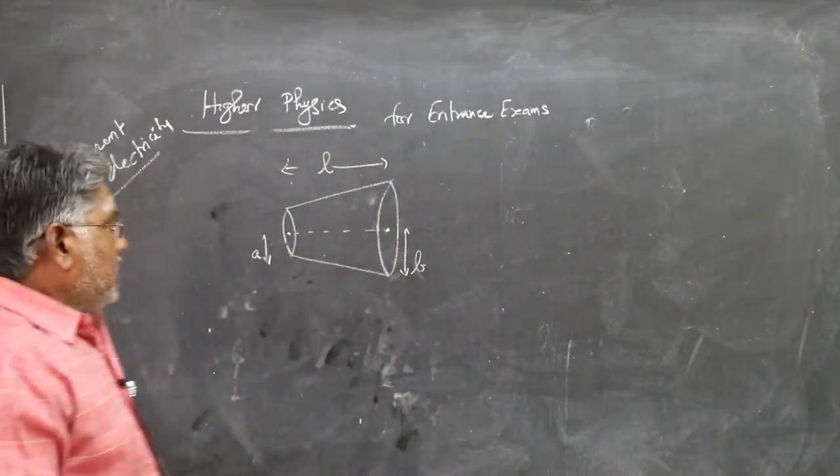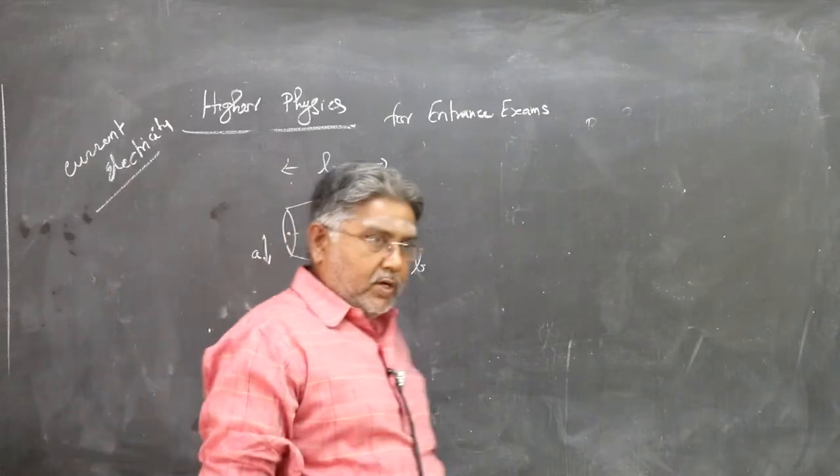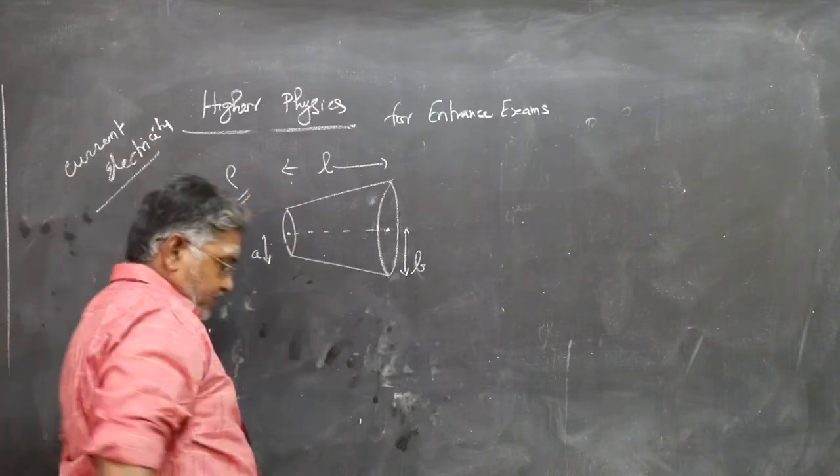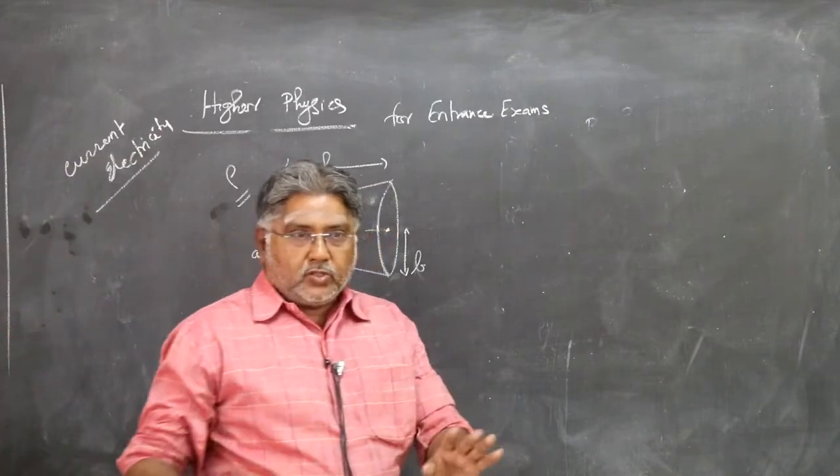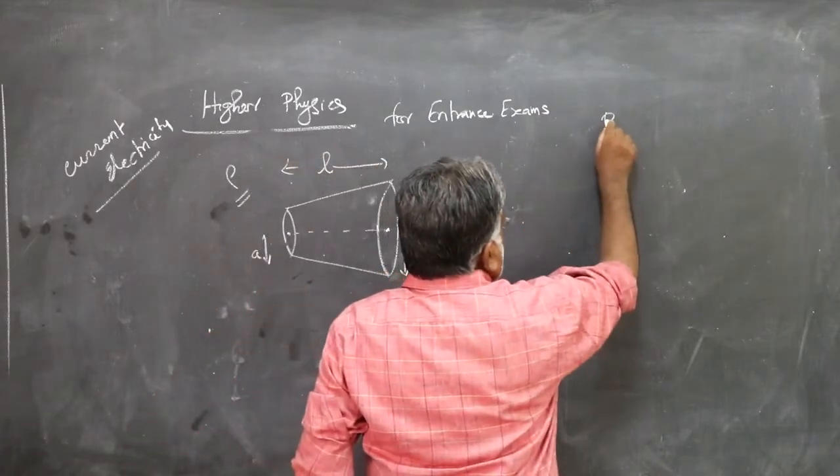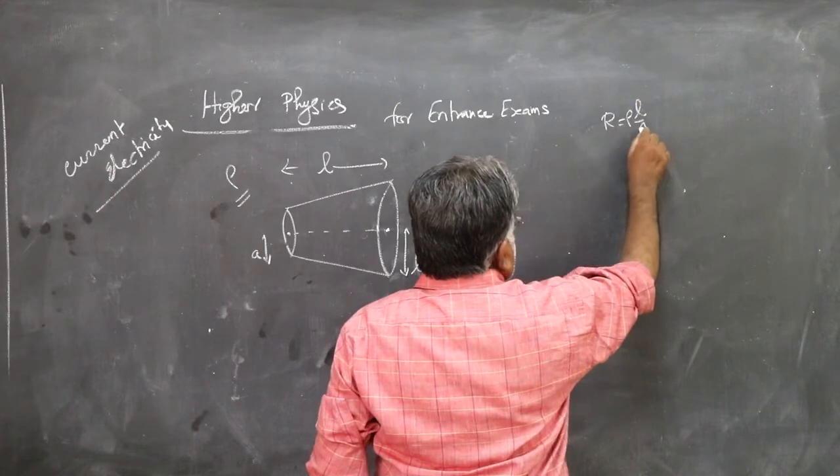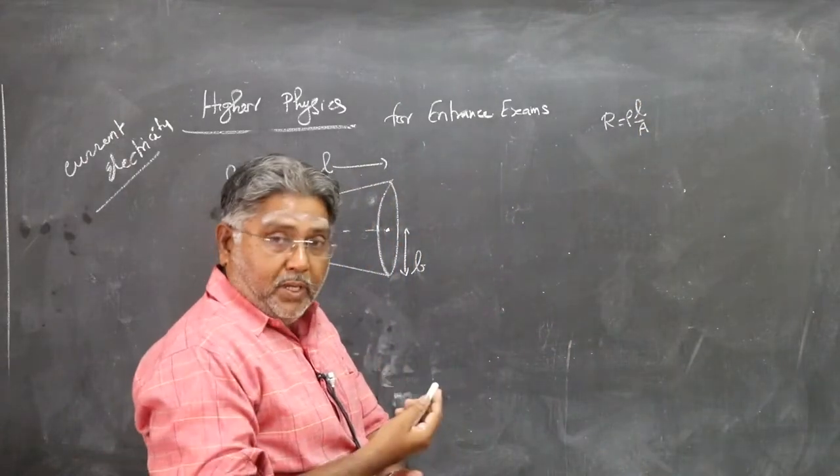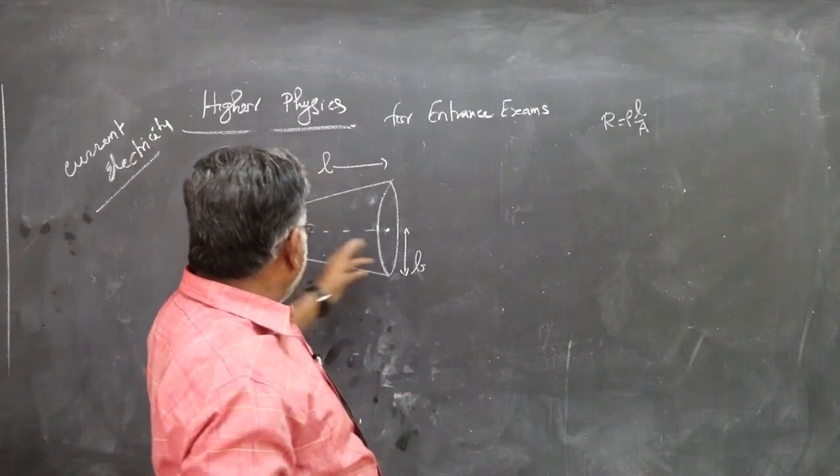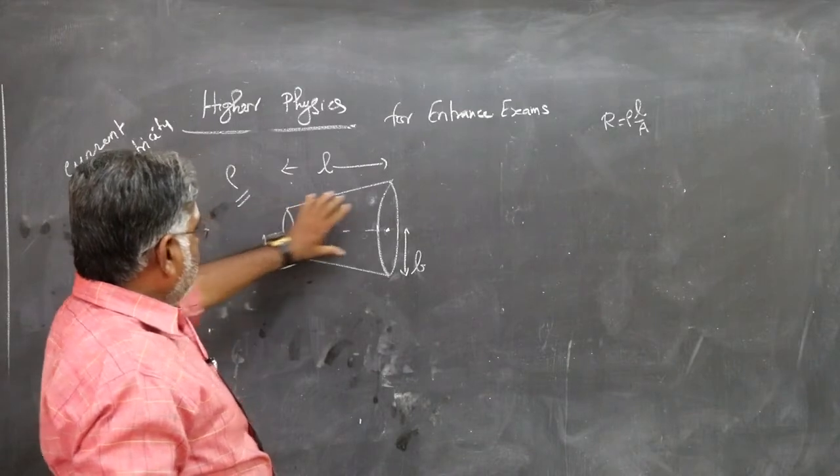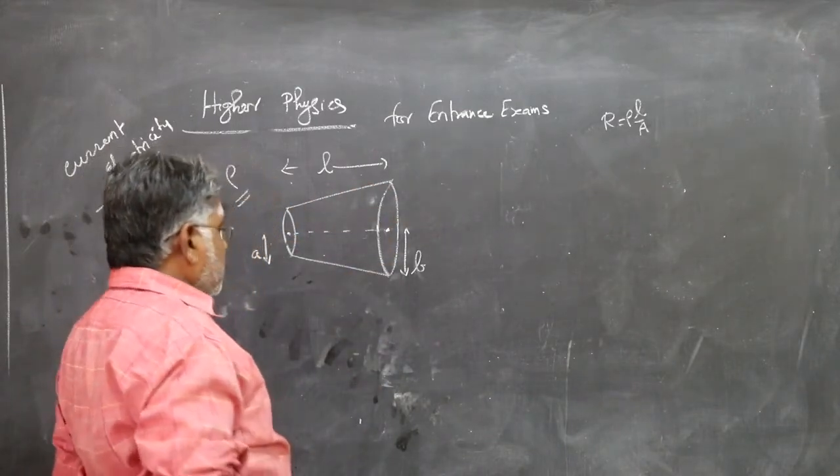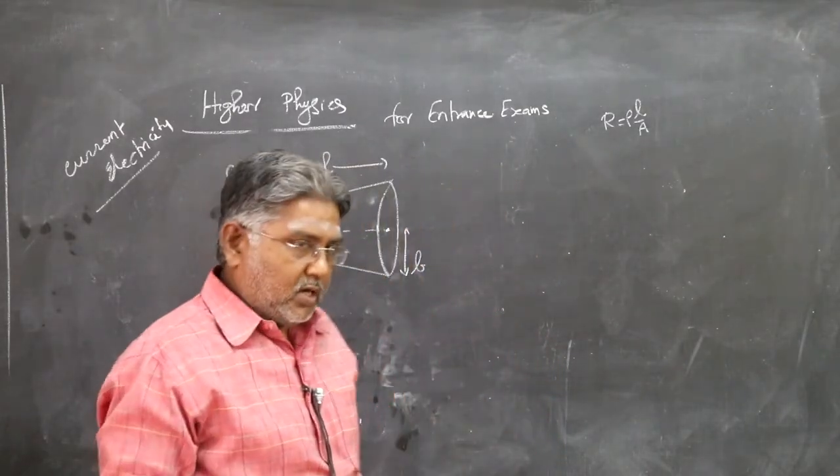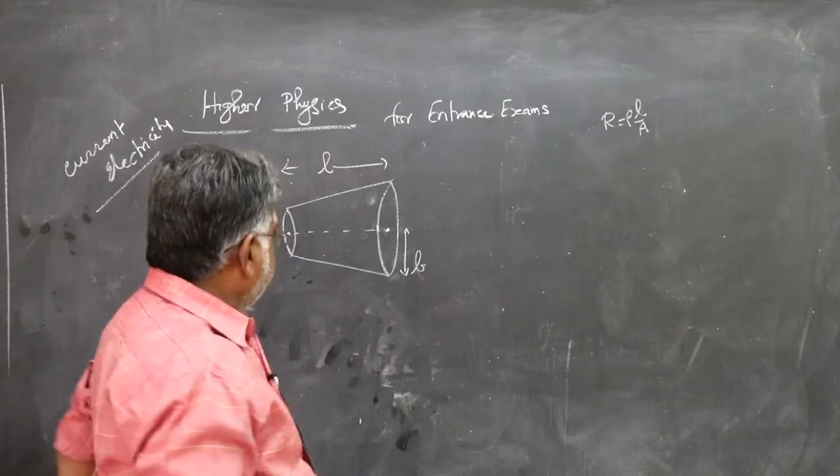You are supposed to find the resistance of the cone. You are also given resistivity of the material of the cone as rho. Suppose if it is made of uniform area of cross section, you have one usual simple formula: R equals rho into L by A. This everybody knows. For that, the area of cross section should be uniform. Here the area is not uniform. Area increases from here to here uniformly. And also it is given current density is uniform across the cross section, perpendicular to the axis.